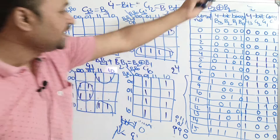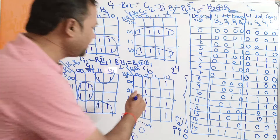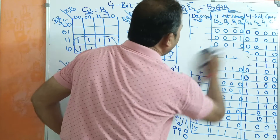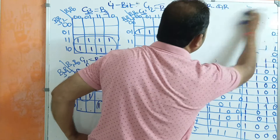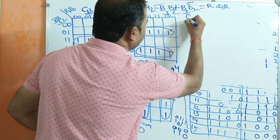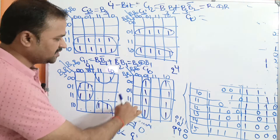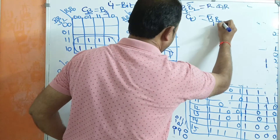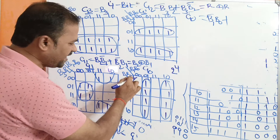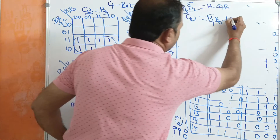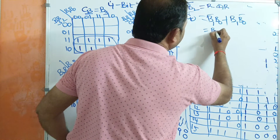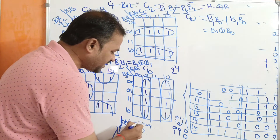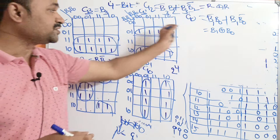Now let us derive the expression for G0. Here we have 8 ones. We can form groups of 4 cells. One group has B1=0 and B0=1, giving B1-bar · B0, while B3 and B2 are changing. Another group has B1=1 and B0=0, giving B1 · B0-bar. So G0 equals B1-bar · B0 plus B1 · B0-bar, which equals B1 XOR B0. The G0 output is obtained by performing XOR on B1 and B0.